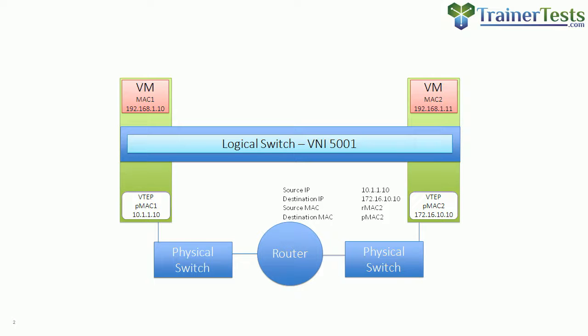The receiving VTEP sees a frame destined for its MAC address. It pulls off the source and destination MAC header, then sees the destination IP — which is itself — and strips off that layer 3 header. It then sees a VXLAN header specifying that this frame belongs on VNI 5001, so it strips off the VXLAN header and places the frame onto that logical switch.